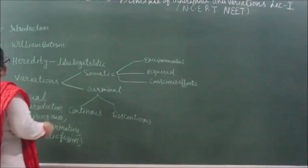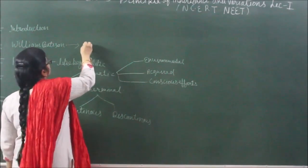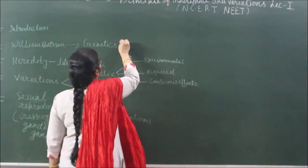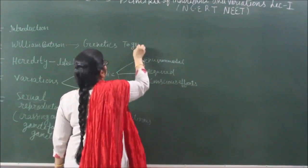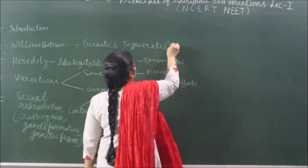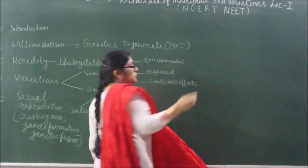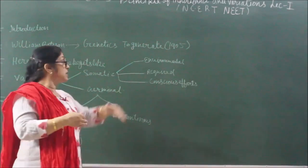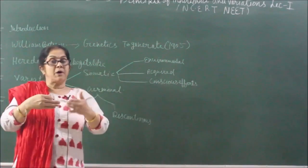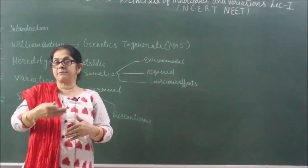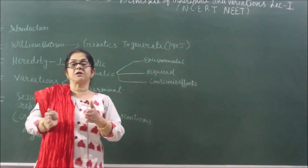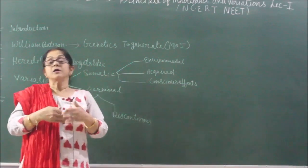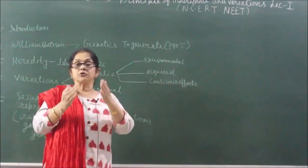There was a scientist named William Bateson — he coined the term 'genetics'. Genetics is a Greek word meaning 'to generate'. William Bateson gave this term in 1905, after the rediscovery of Mendel's work. The whole chapter is basically based on Mendel's principles — which way Mendel made the principles and how genetics follows those principles, we will study that later.